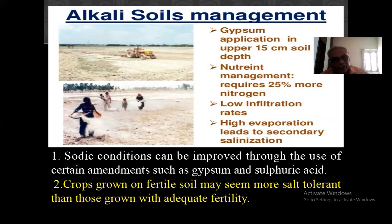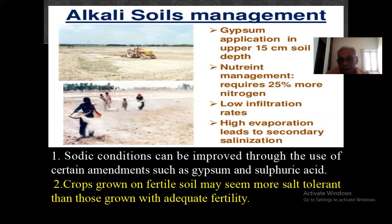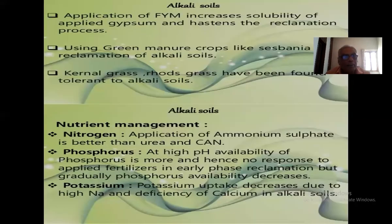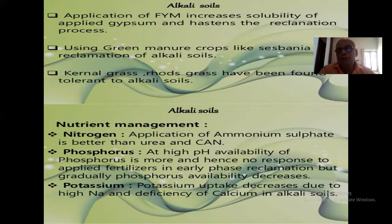Sodic conditions can be improved through use of certain amendments — gypsum and sulfuric acid. Crops grown on fertile soil may seem more tolerant than those grown with adequate fertility. Application of farm yard manure — cow dung or bullock dung — increases solubility of the applied gypsum and hastens the reclamation process.